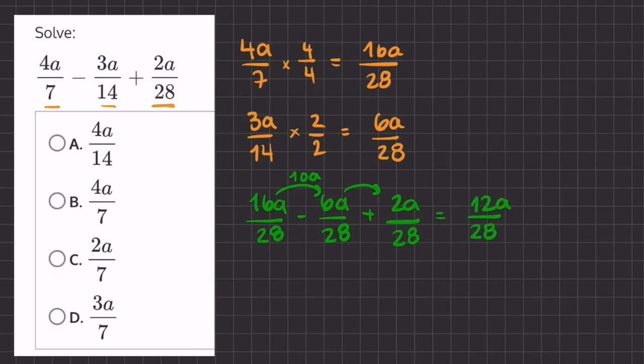Now we have to simplify this fraction, and we'll do so by dividing the numerator and denominator by 2, and we will get 6a over 14. And if we further divide by 2, we will get 3a over 7, meaning that d will be our final answer.